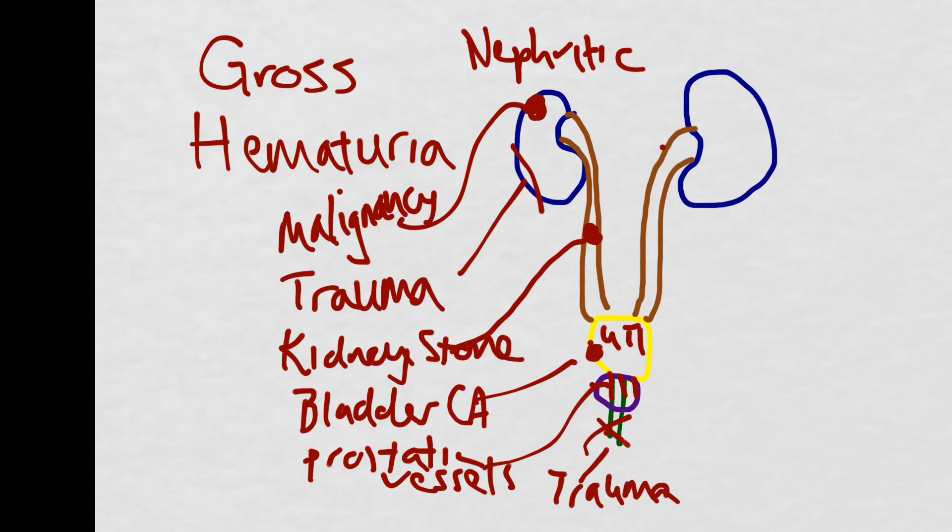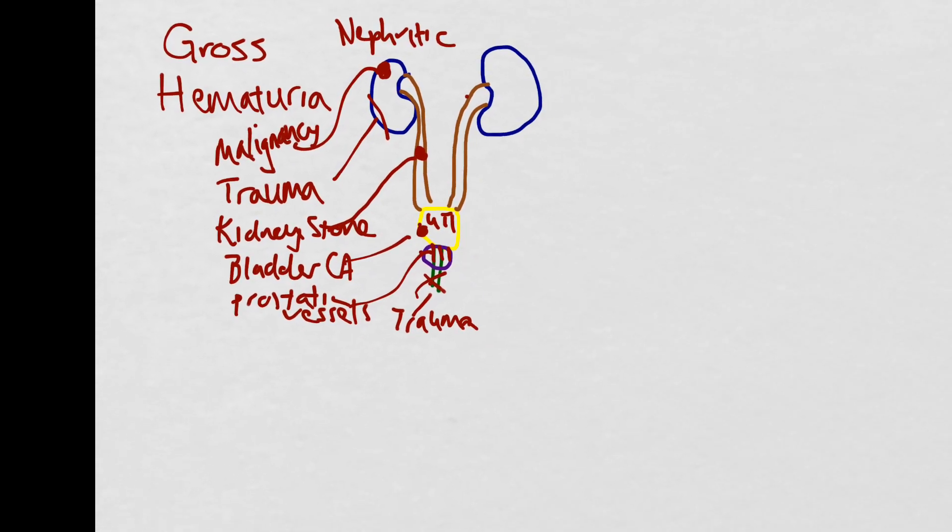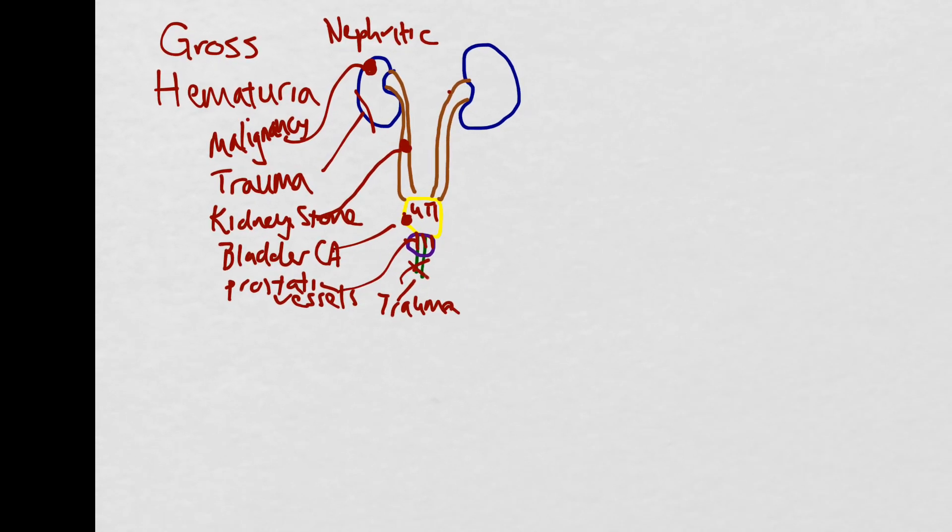Now that we've thought of our differential diagnosis, we can move on to the history. You'll specifically want to ask if the patient sees blood at the beginning of the stream, the end of the stream, or throughout the stream.